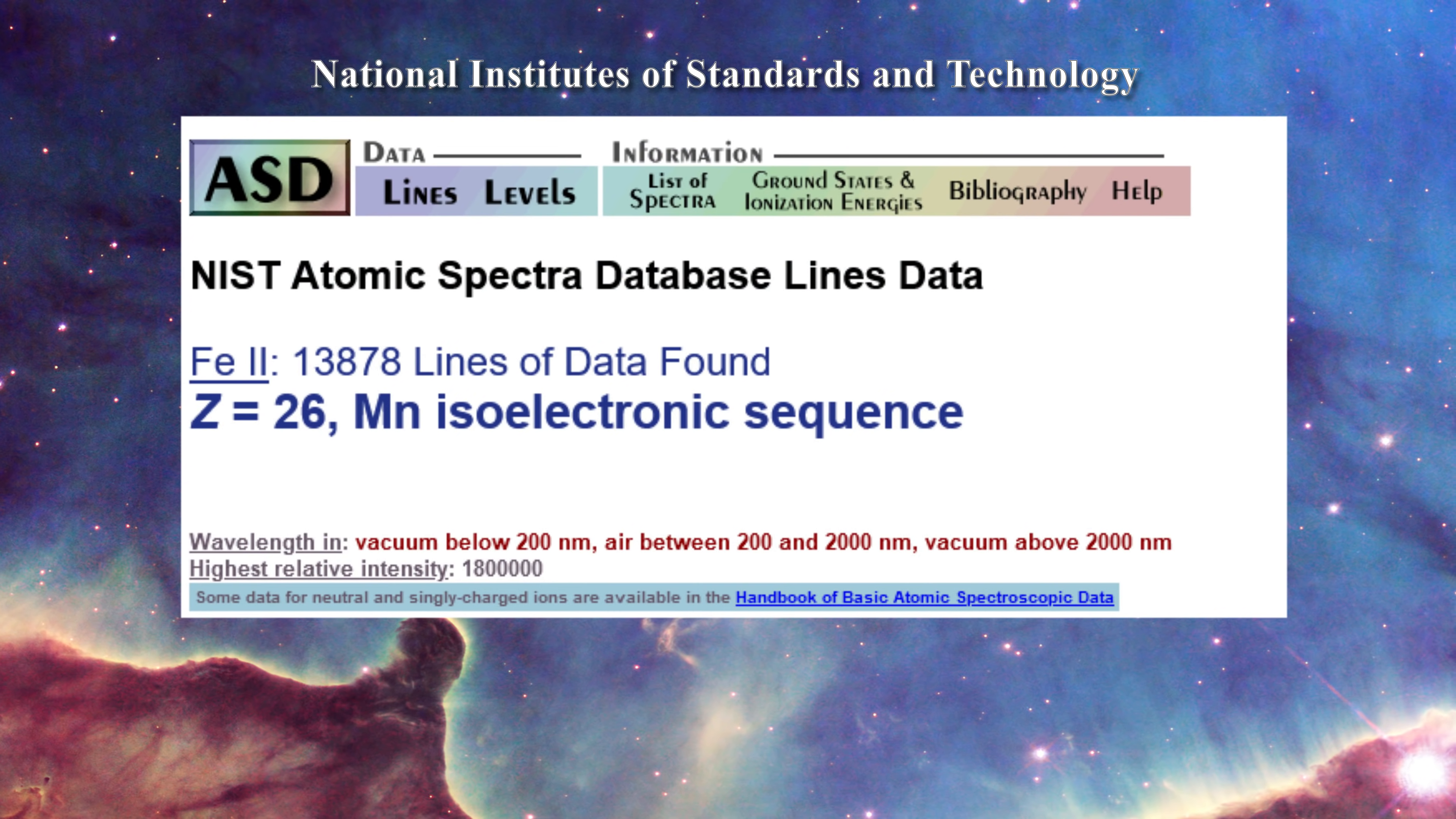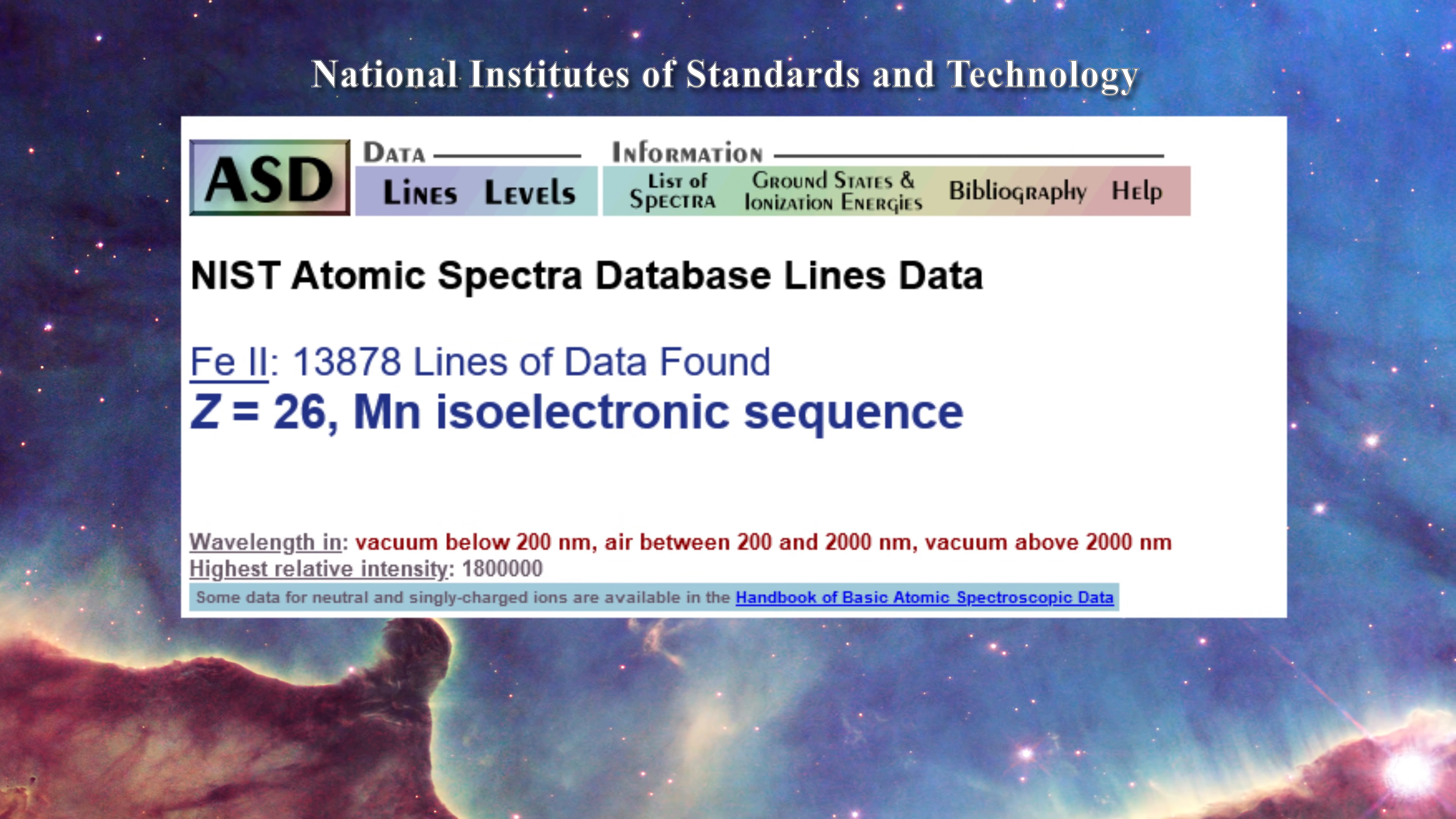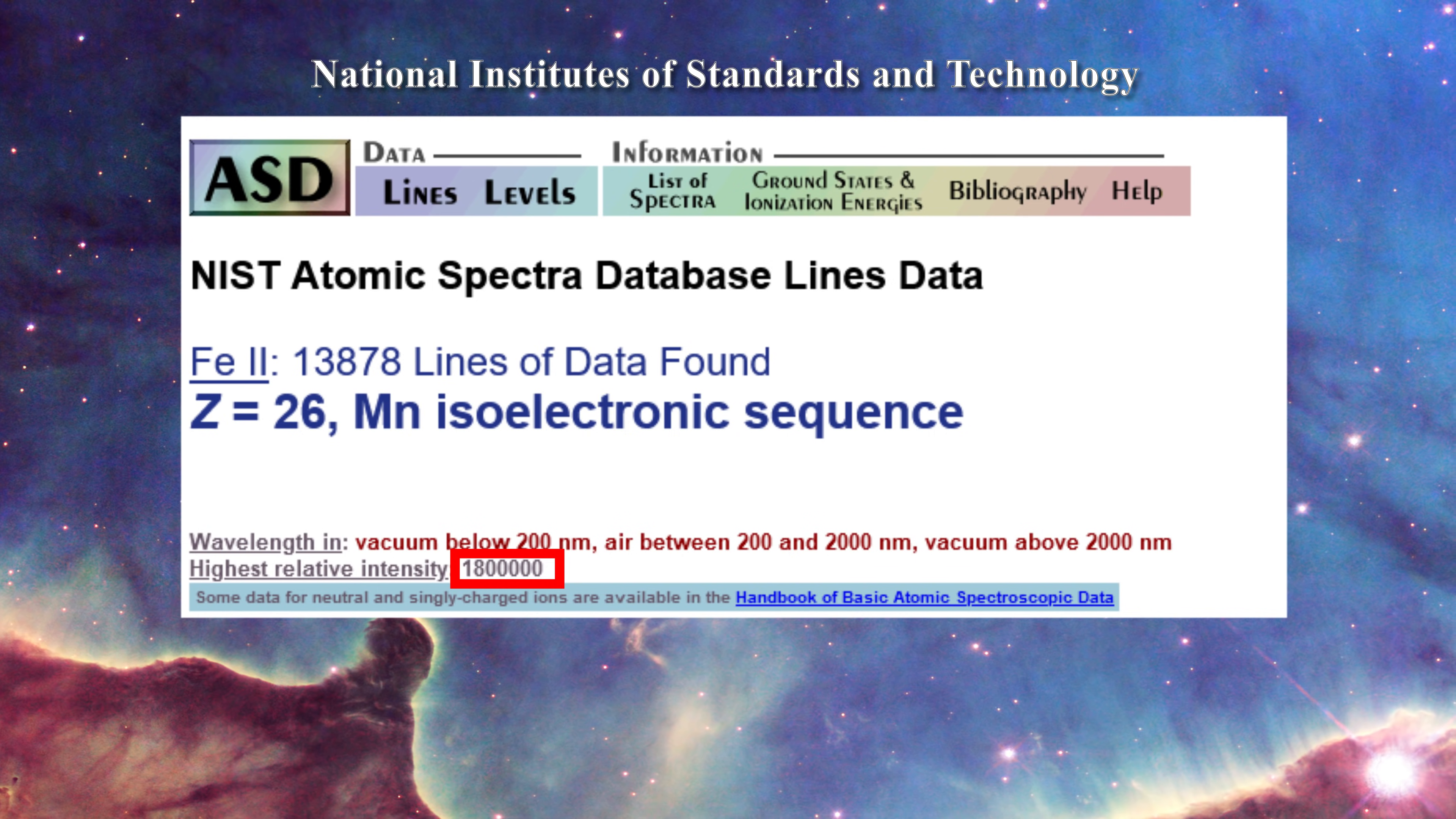Here's what the top of the page looks like for iron 2. That is an iron atom which has lost a single electron. One can see that nearly 14,000 spectroscopic lines have been identified for this ion. We also see that the lines are being measured either in vacuum or in air. Next we see the value of the maximum relative intensity for the most powerful line. In this case 1,800,000.